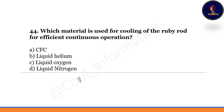Which material is used for cooling of the ruby rod for efficient continuous operation? Options are CFC, liquid helium, liquid oxygen, or liquid nitrogen. Correct option is D — liquid nitrogen.